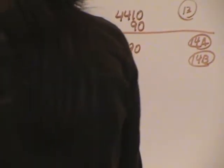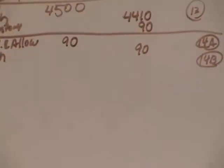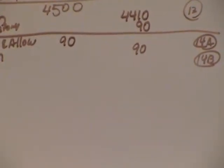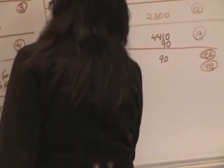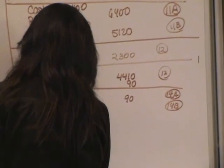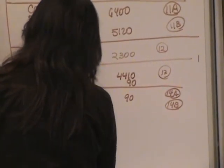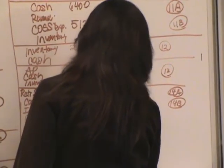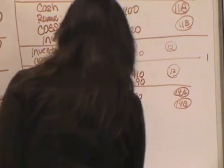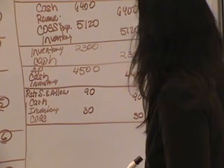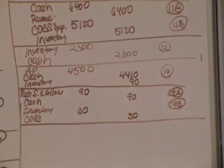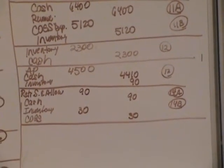Now we're also going to reverse entry B. What we're going to do is credit CGS and debit inventory. Debit inventory first — the stuff has a scrap value of $30. So debit inventory and credit cost of goods sold. This is the one case where we decrease expense. Expense is always increasing — this is the one case where it's credited.